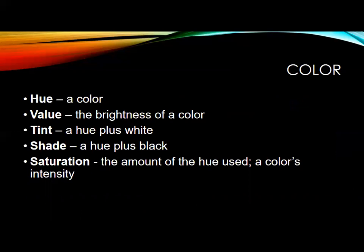Here are some important color terms to remember. Hue is a color — it's basically interchangeable with the word color. Value is the brightness of a color. Tint is a hue plus white. Shade is a hue plus black — don't get confused, even though we think of tinting windows as making them darker. And saturation is the amount of hue used, or color intensity. Make sure you keep those noted and go back to look at them.